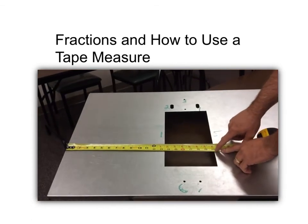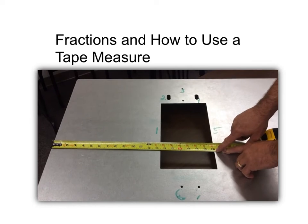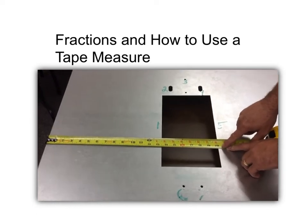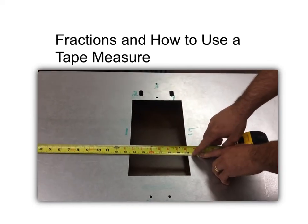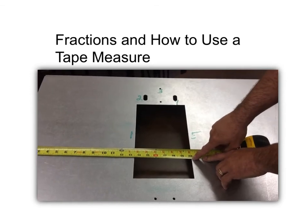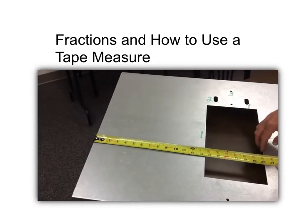which is going to be the eighth. We've got 16th, eighth, back to a 16th, and then it goes to a quarter. That's the increments of how a tape measure grows up. So it's 20 and 1 eighth from the edge to this edge of the part.